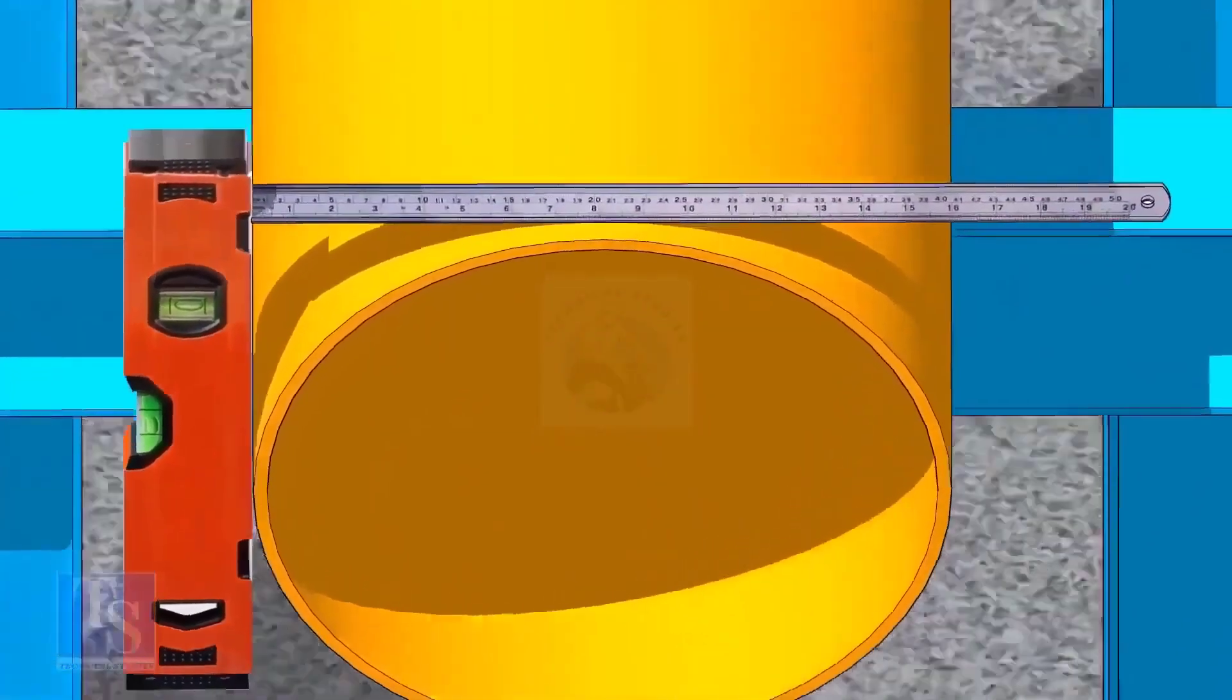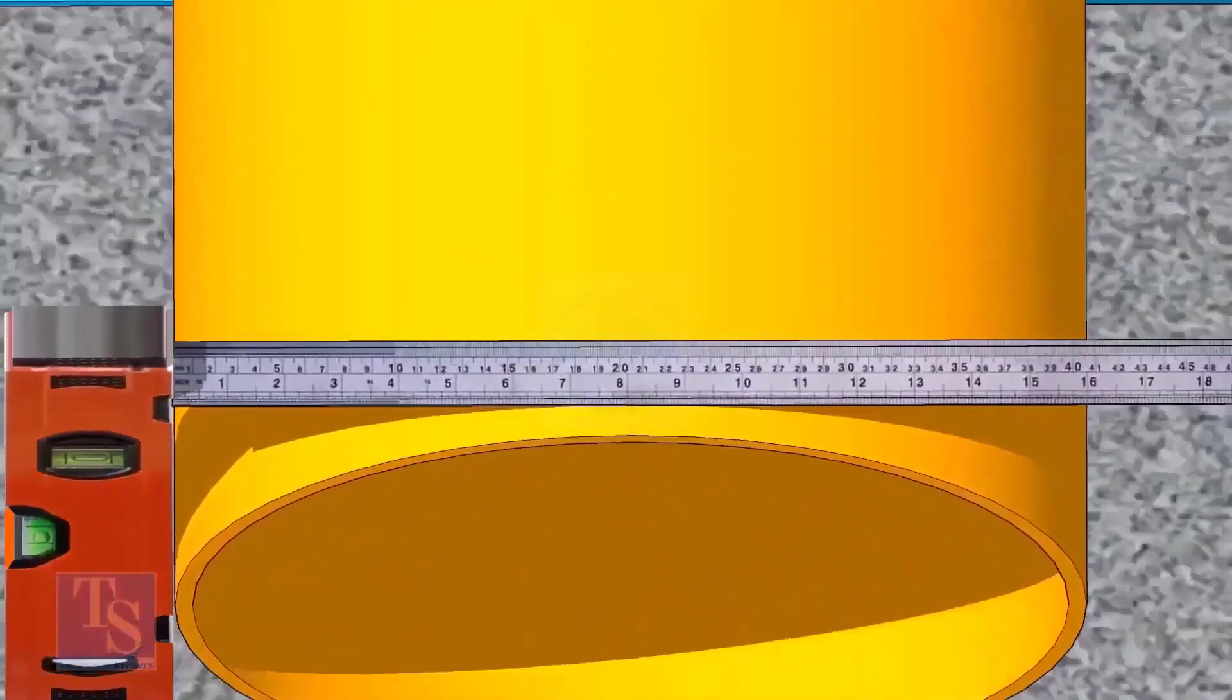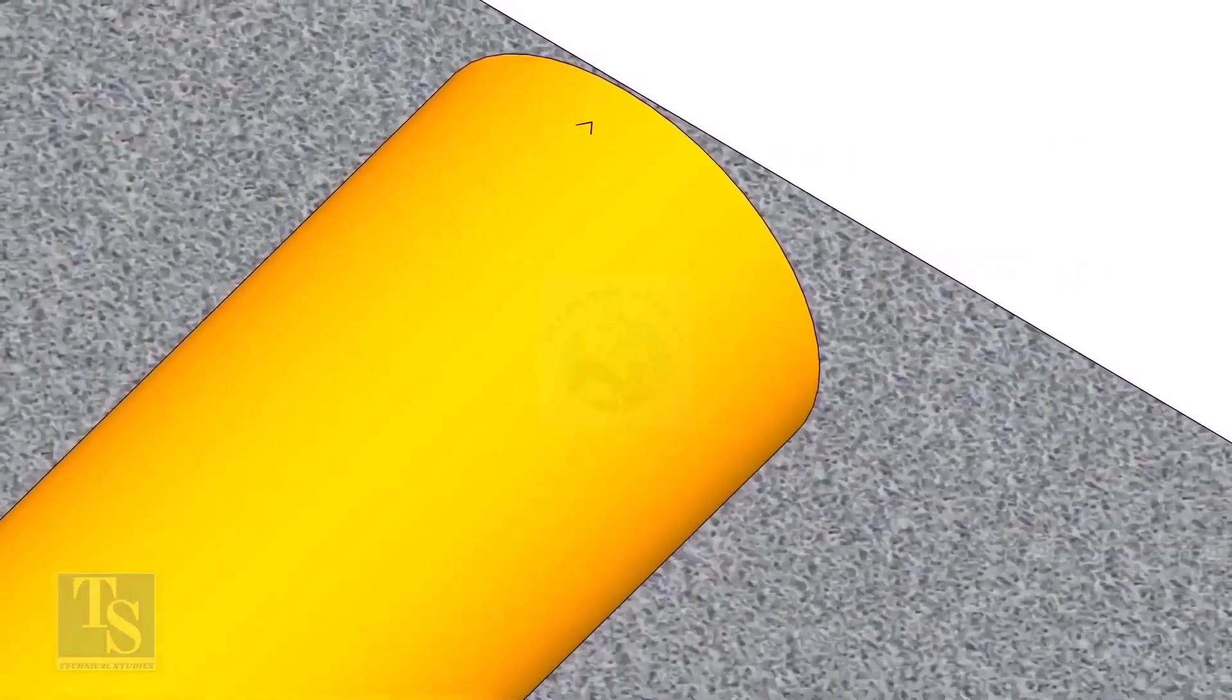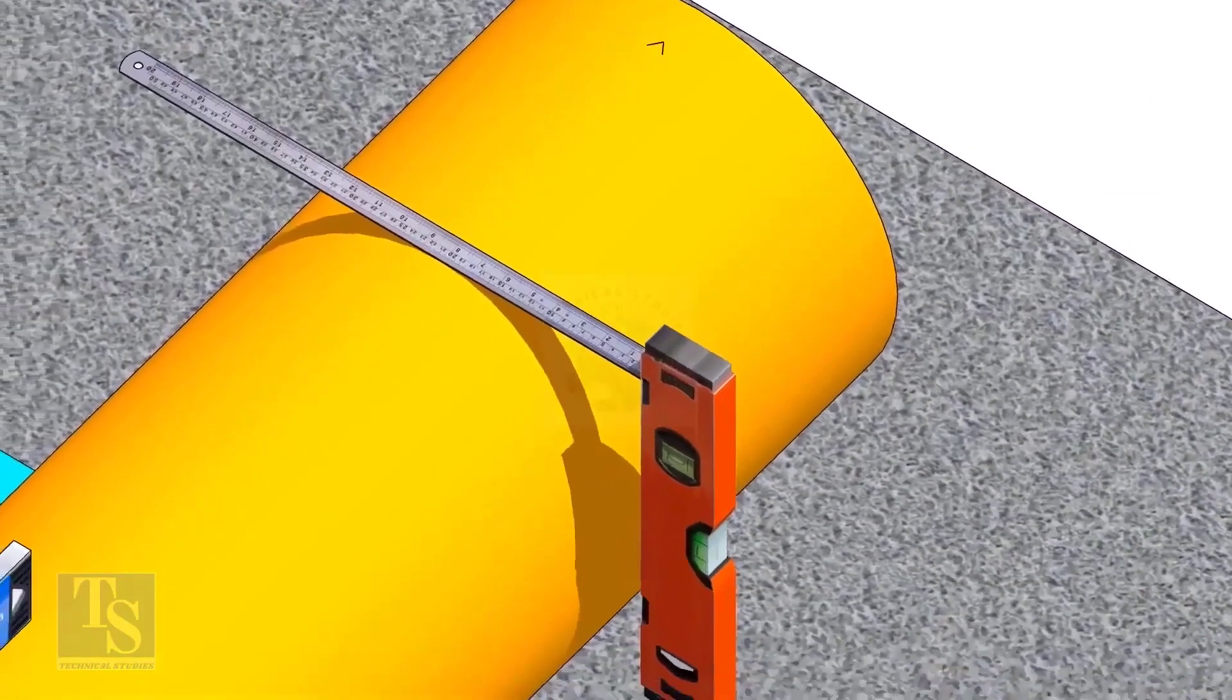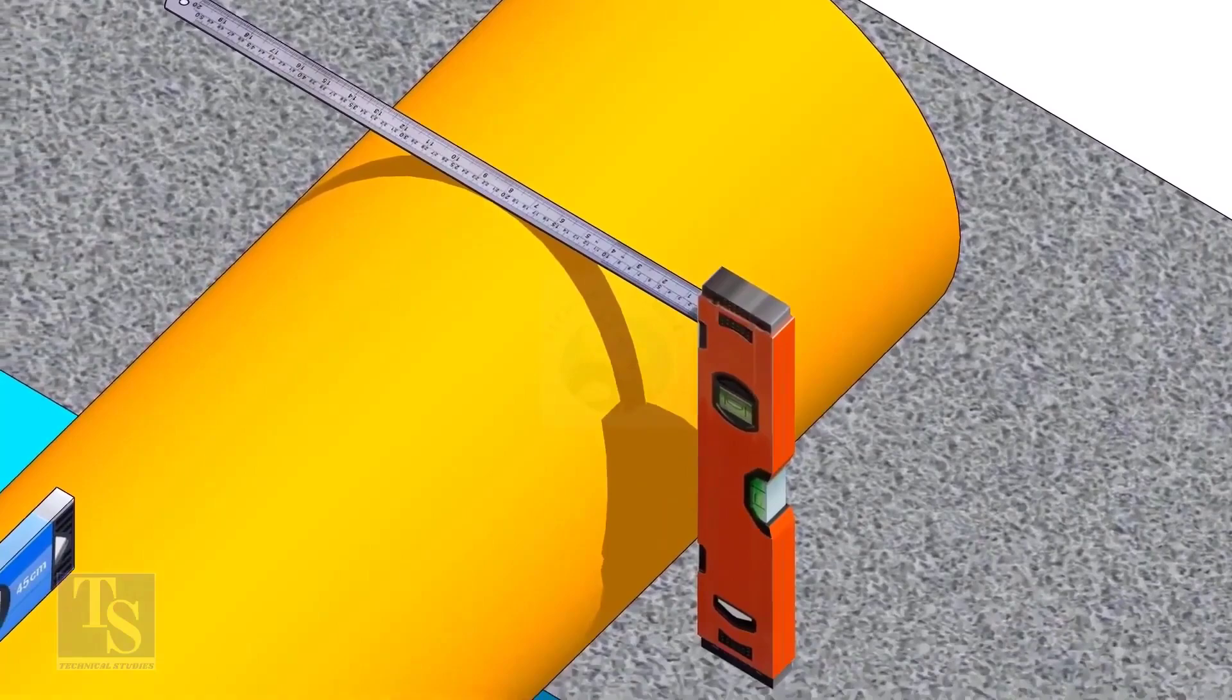Mark half OD at 300mm apart. This pipe OD is 406mm, so mark 203mm from the vertical level bottle on the top of the pipe. And draw a line connecting these marks.